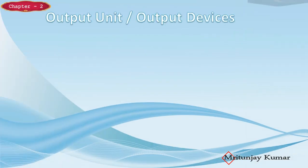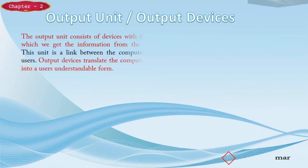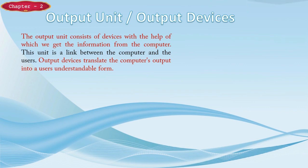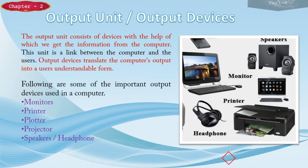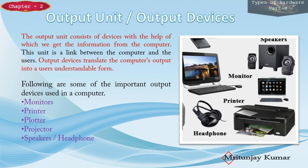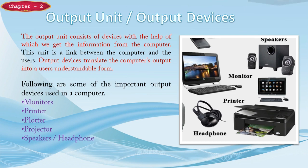The output unit consists of devices with the help of which we get information from the computer, and this unit is a link between the computer and the user. Output devices translate the computer's output into a user-understandable form. Some important output devices used in a computer are monitor, printer, plotters, projectors, speaker, headphone, etc.